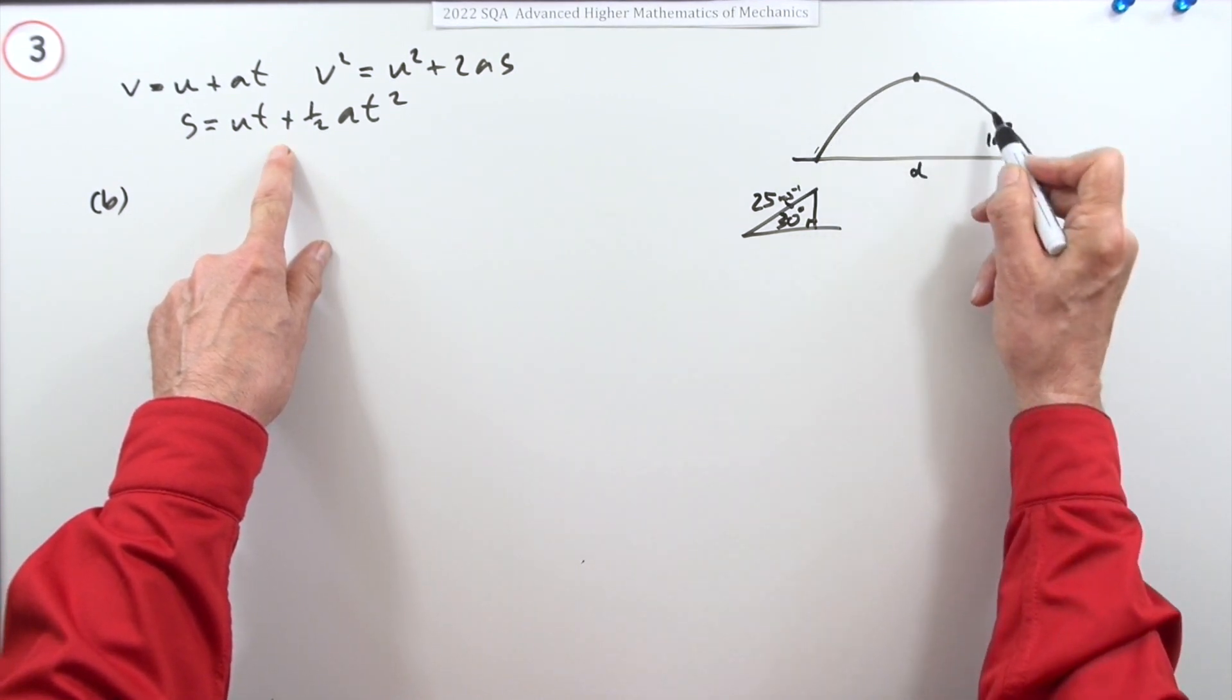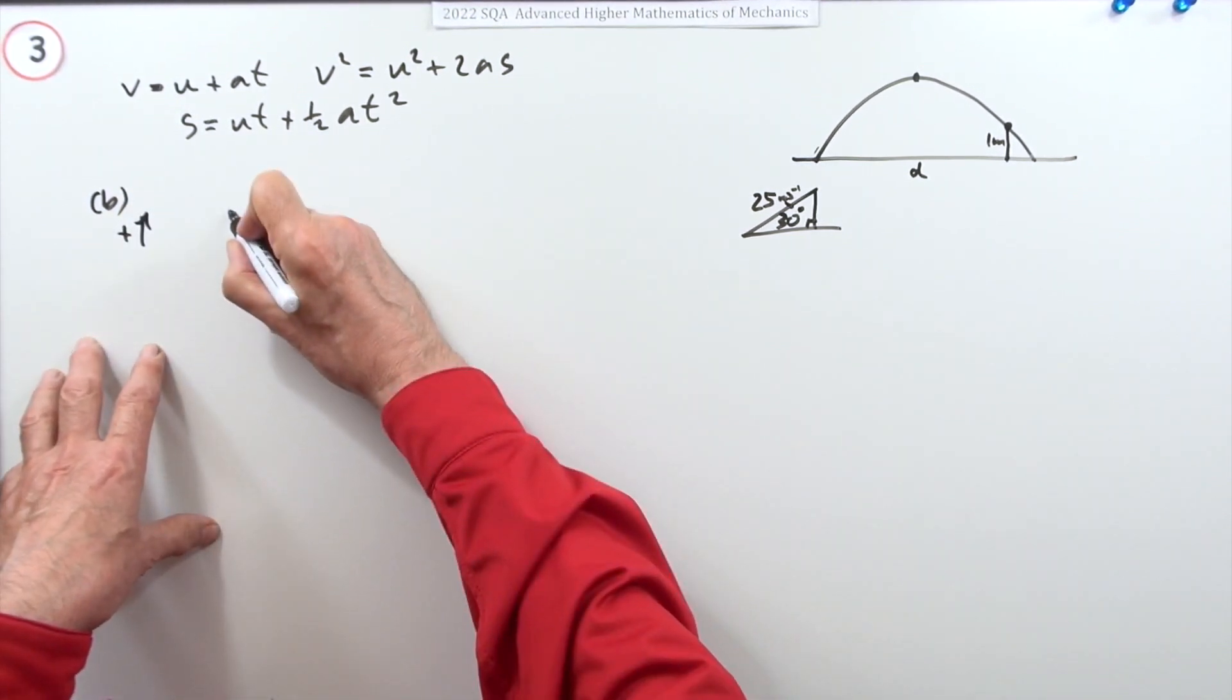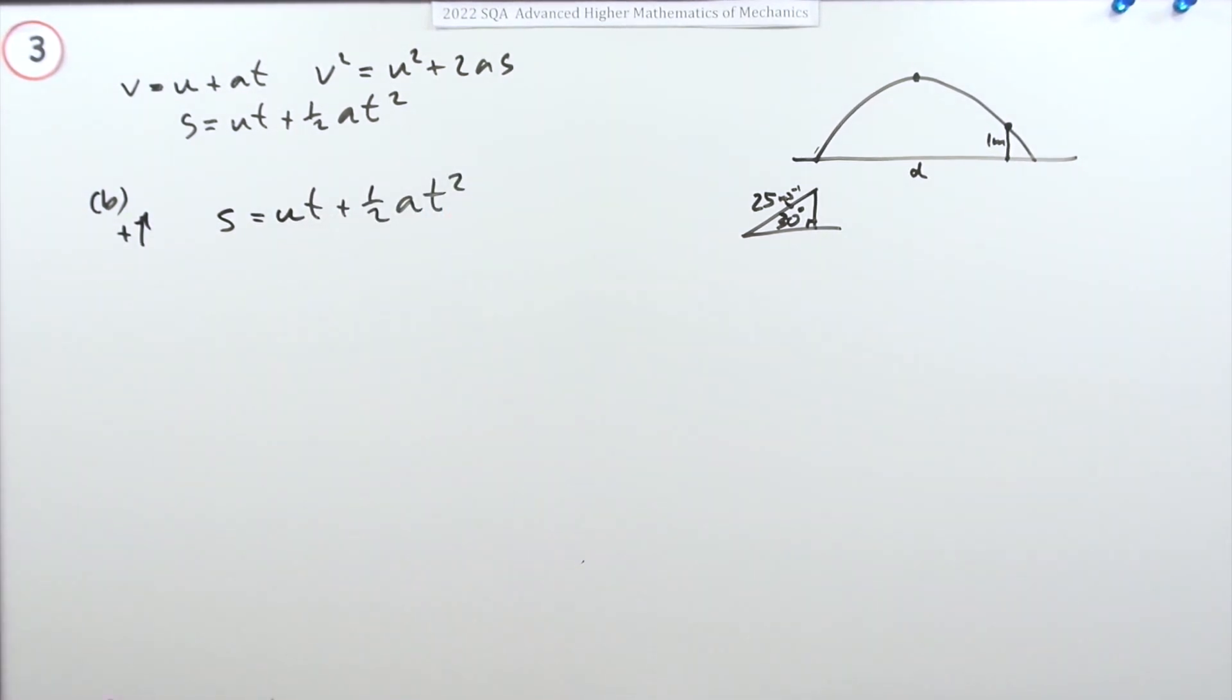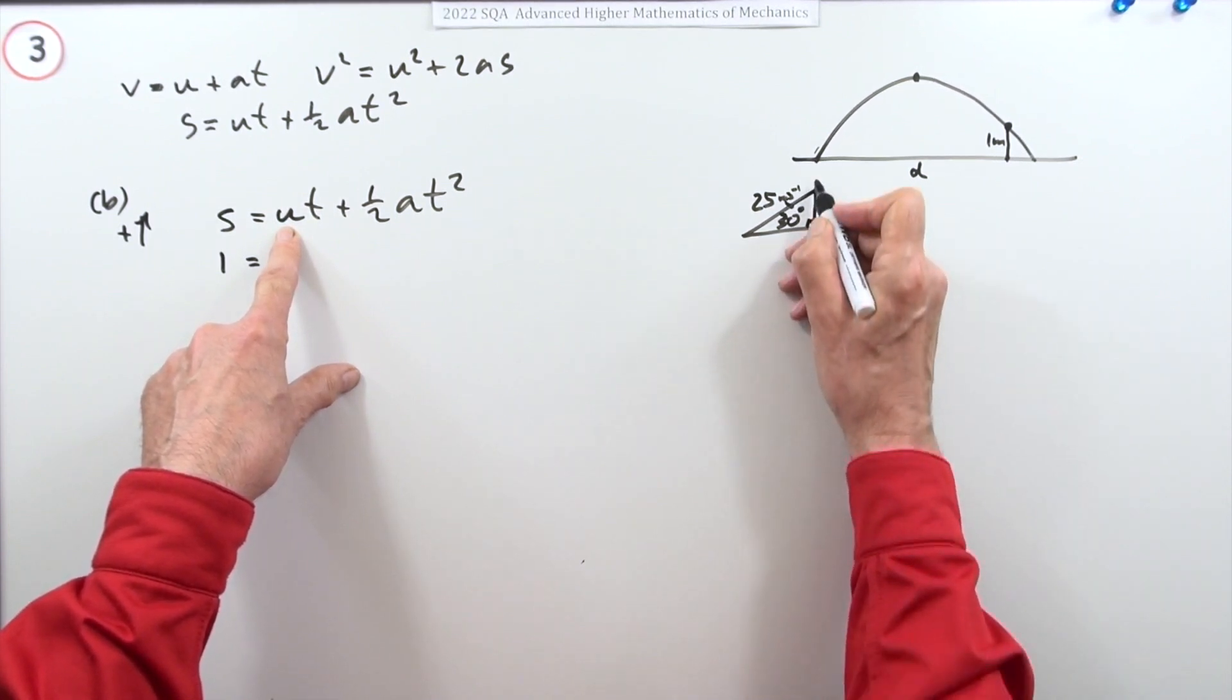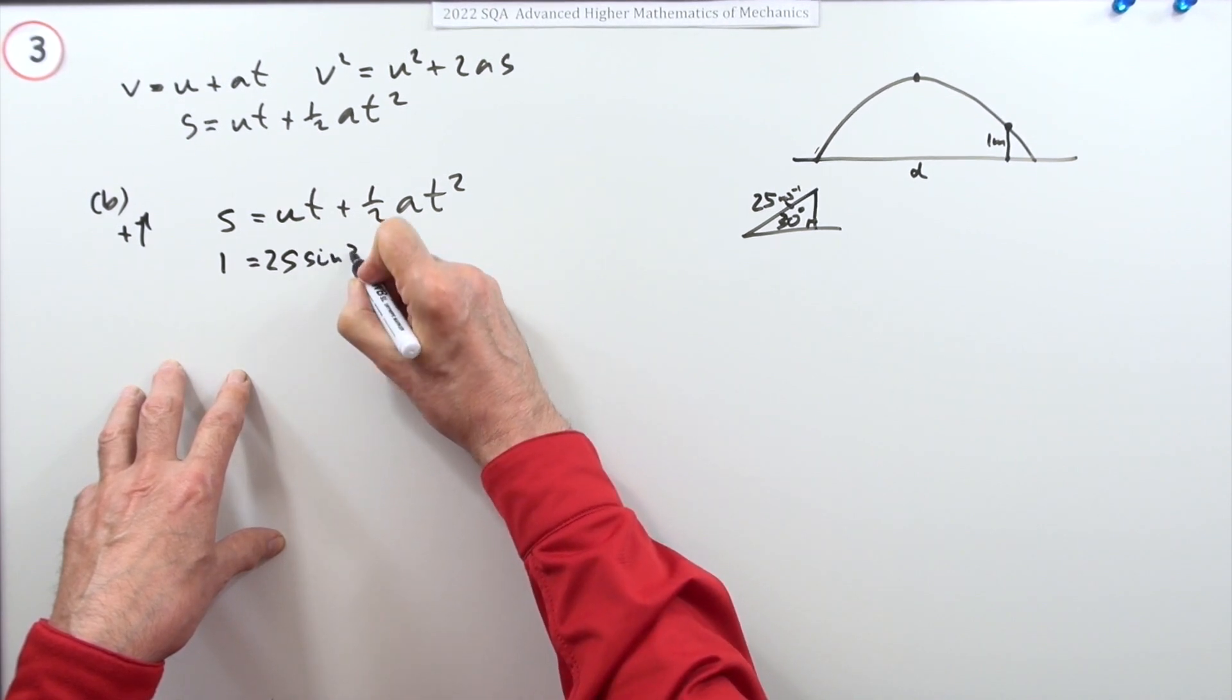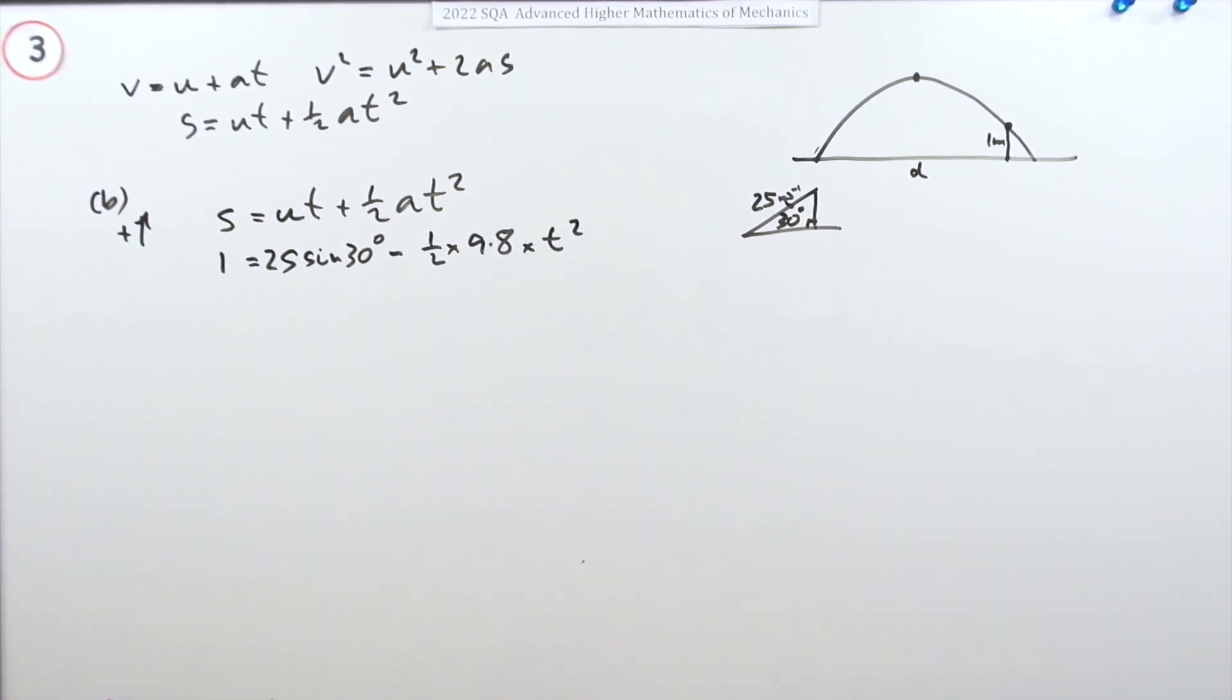So we've got s equals ut plus a half at squared. I'll put the figure straight in. I want the height to be one, the initial speed is 25 sine 30 minus a half of 9.8 times t squared. I forgot to put the t in there.